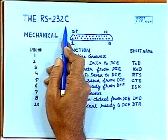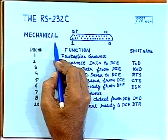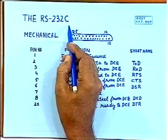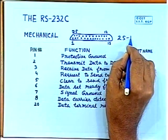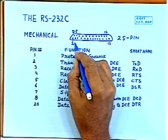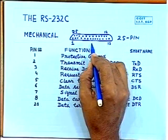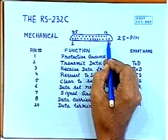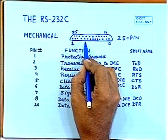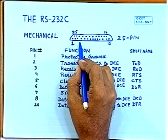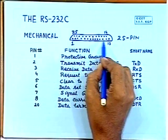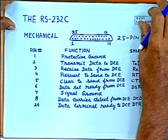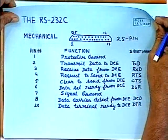Mechanical specifies the type of connector used for interfacing. In case of RS-232C, a 25-pin connector is used for interfacing between DTE and DCE, with male and female connectors for mechanical interfacing. The various pin functions we will discuss later.